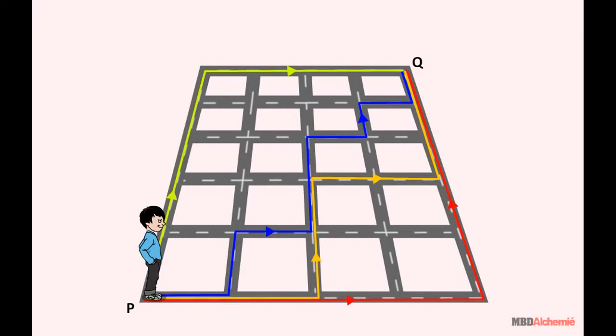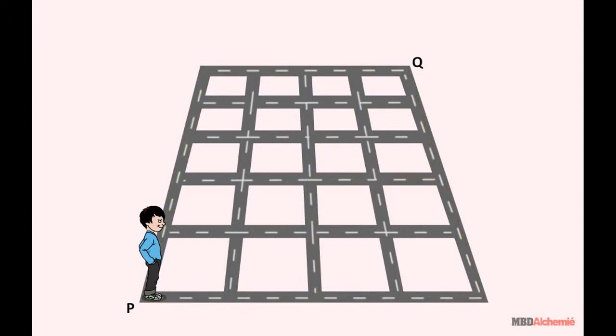He can choose any of these paths for commutation. He is restricted to move only in the right and upward direction. This means if he is at this point, then he cannot go on this path or this.